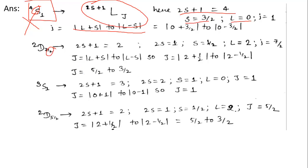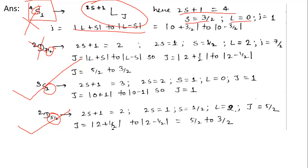Third term symbol: 3S1. Here 2S+1 = 3, so S = 1. S state means L = 0. J ranges from 0+1 to 0−1, i.e., J = 1 to 1 — and J given is 1, so this IS a possible term notation. Fourth: 2D5/2. Here 2S+1 = 2, so S = 1/2 and L = 2. J ranges from 2+1/2 to 2−1/2, i.e., 5/2 to 3/2. Since J = 5/2 is within range, this is also a possible term notation.